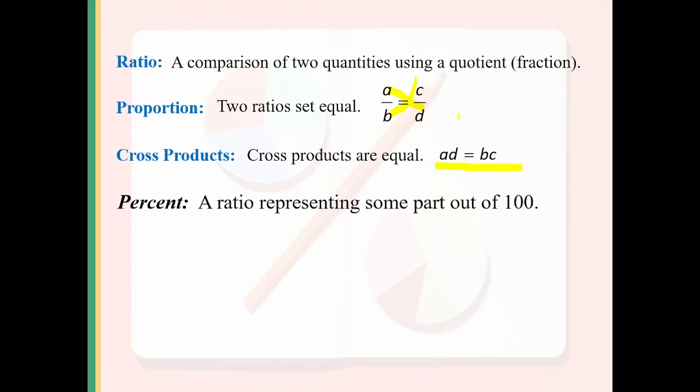Now comes the percentage thing. If you multiply the ratio, if you multiply a over b by 100, it is called a percentage of a with respect to b.